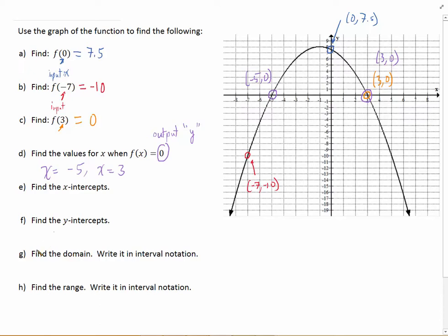Part E. Find the x-intercepts. Well, we actually just did that. And I wrote them in purple. The x-intercepts are negative 5, 0 and 3, 0. Find the y-intercepts. Well, there's actually only one y-intercept, and I already marked it in blue earlier. The y-intercept happens when x equals 0, and so the y-intercept is the point 0, 7.5.